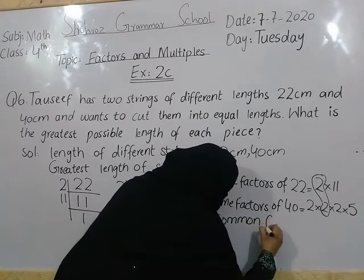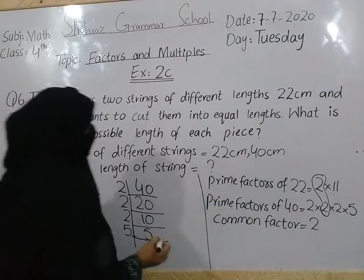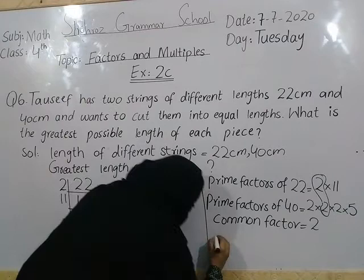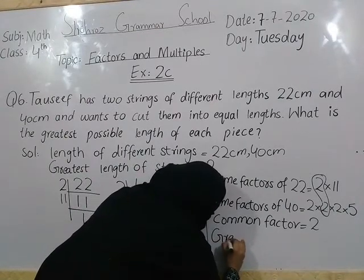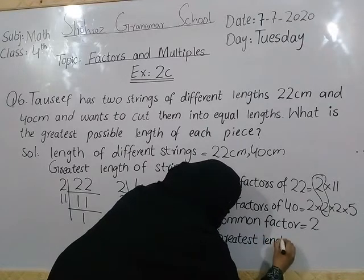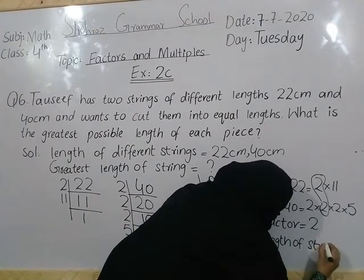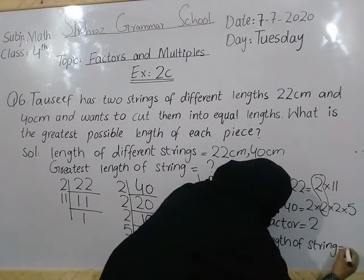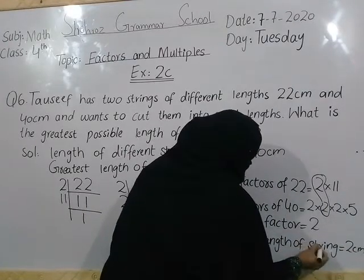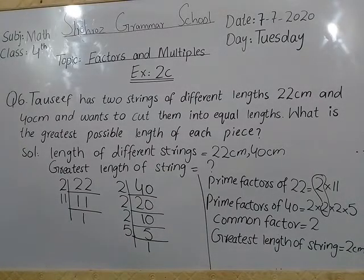We write it here. The greatest length of the string — the common factor is 2. So now we are looking at centimeters. The greatest length of the string is 2 centimeters. Okay, students?